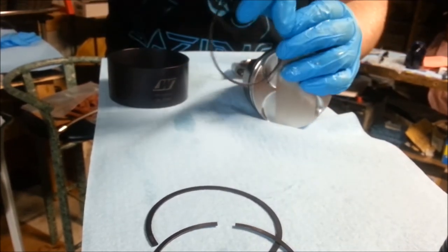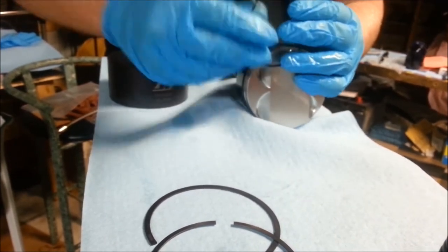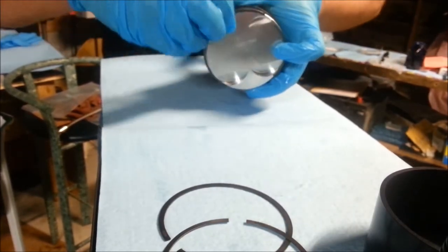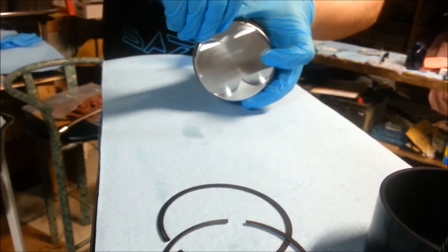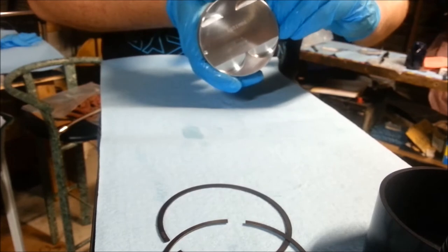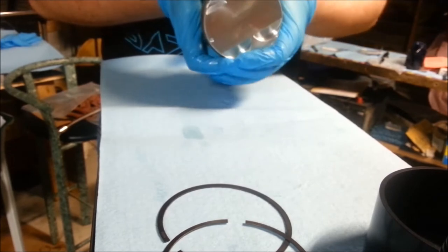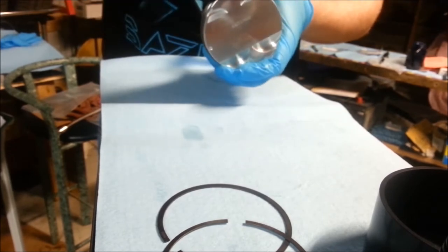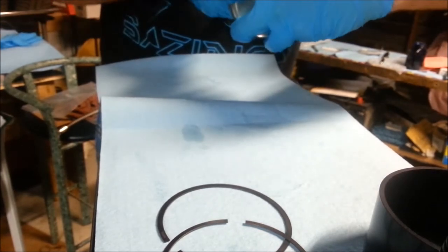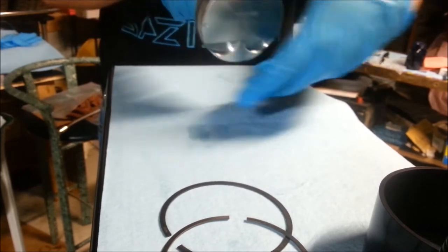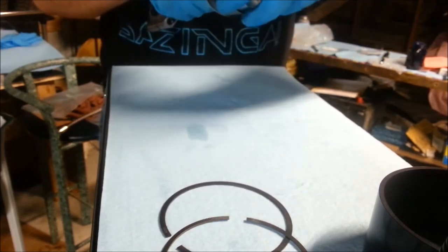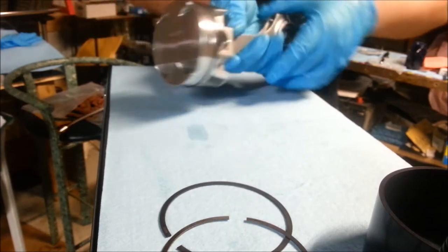Next, we flip it over again. We double check that that mark is right where it needs to be. And we install this one. Once it's done, you should have a little oil gasket sandwich thing going on. And that's your oil seal.